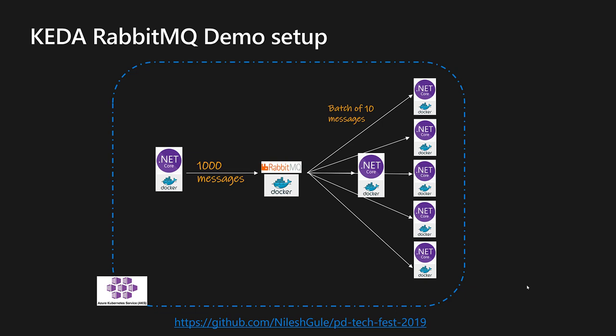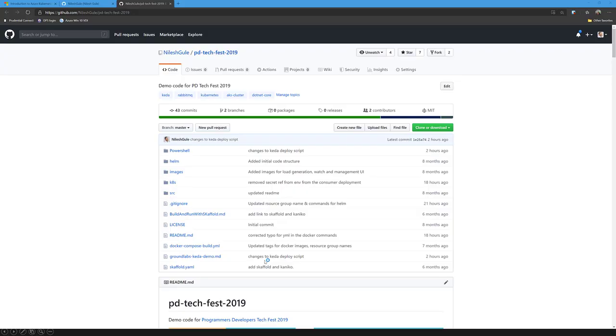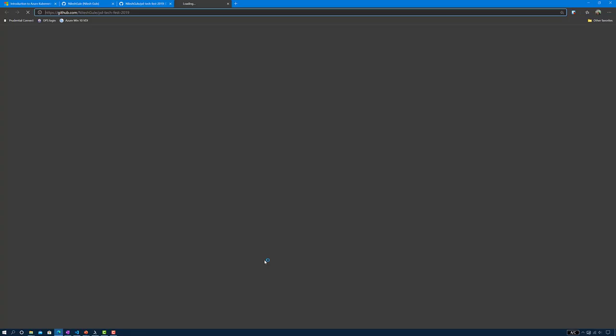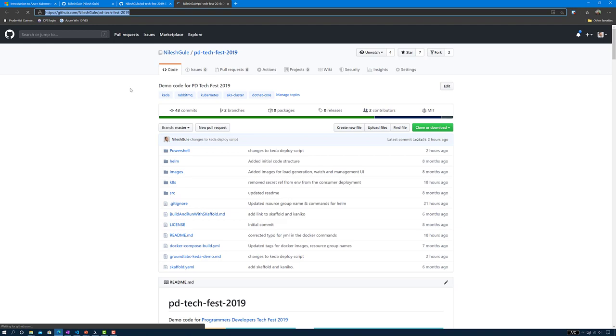So let's understand what the application would look like. It's a .NET Core application which has a producer that produces a set of messages — in this case a thousand messages — and publishes them onto RabbitMQ. And there is a .NET Core consumer which picks up these messages and processes them in a batch of 10 messages. The source code for this application is available in my GitHub repo.